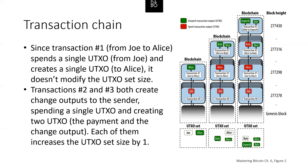Here's an example of a transaction chain from Joe to Alice, Alice to Bob, and Bob to Gopesh. Let's talk about how this works.